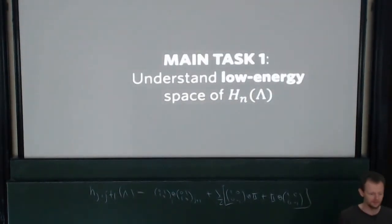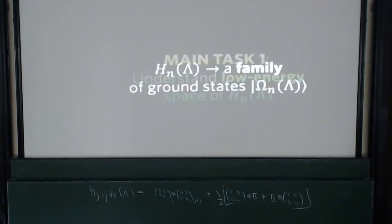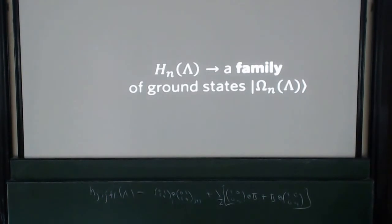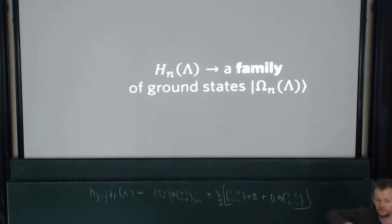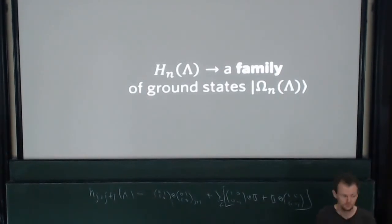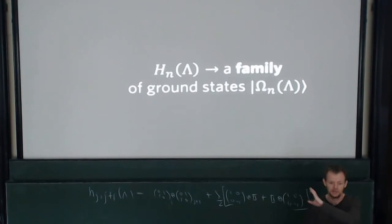That leads us finally to our main task. Given a local quantum Hamiltonian, we want to understand the ground state — at least the low-energy space. It's a family, and I want to emphasize this word: when studying quantum phase transitions, you don't just have one model, one ground state. You have a two-parameter family — n and lambda — and we care about these eigenvectors for all n and lambda, especially those values of lambda going to the critical point. That's a concrete task we have to engage with. Let's now start reporting some results we have towards this goal. Why do we even think it's doable?